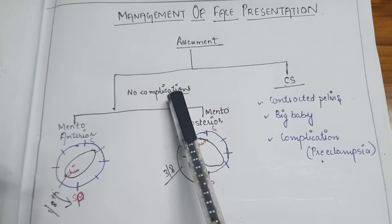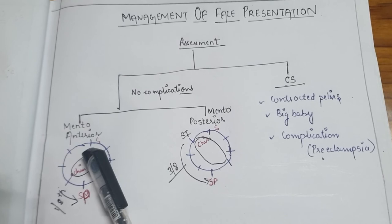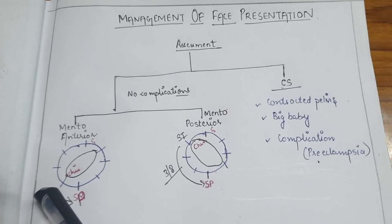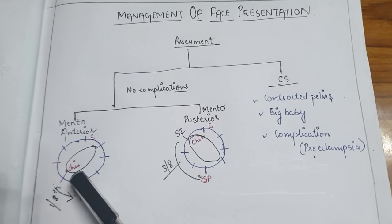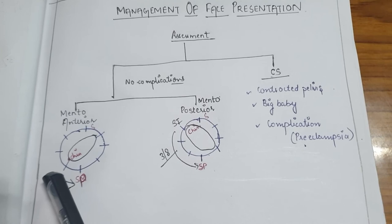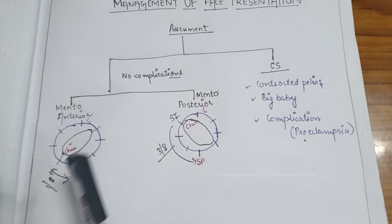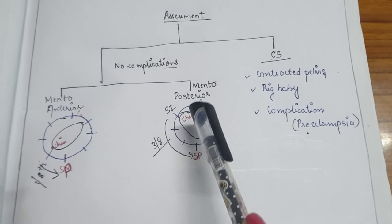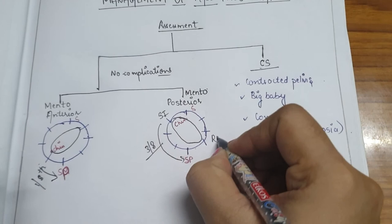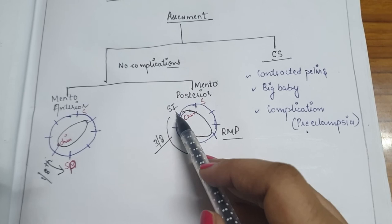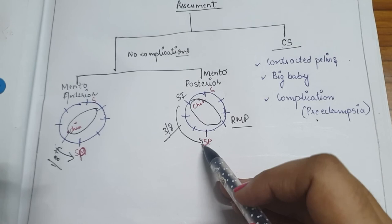If there are no complications, there are two conditions: mento anterior position and mento posterior position. In mento anterior position, during internal rotation the chin only has to move one-eighth of a circle. In mento posterior position, such as right mento posterior where the chin lies at the right sacroiliac joint, the chin has to move three-eighths of a circle — this is a risky position because arrest or malrotation may occur.